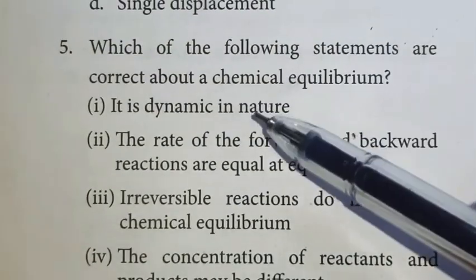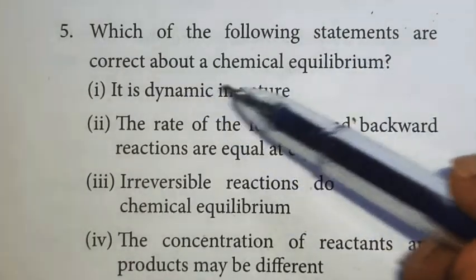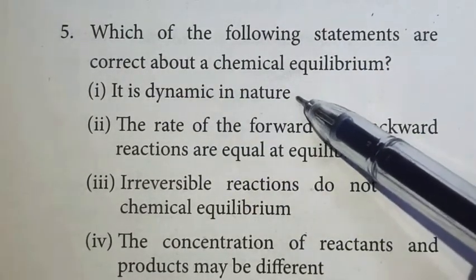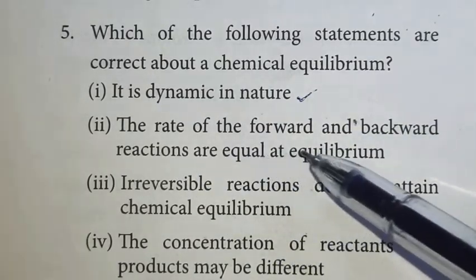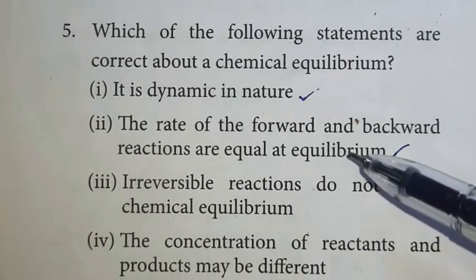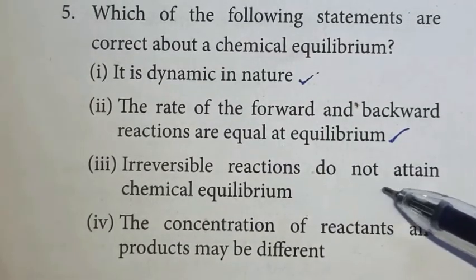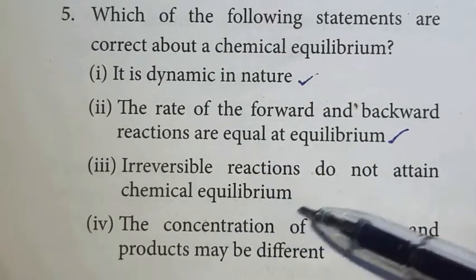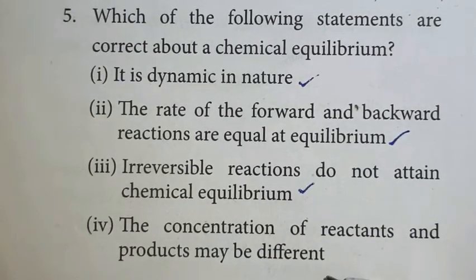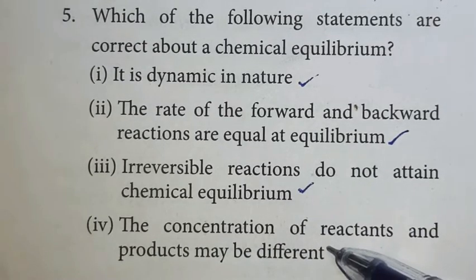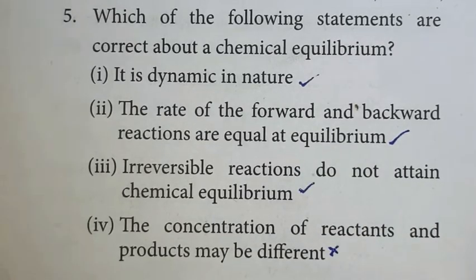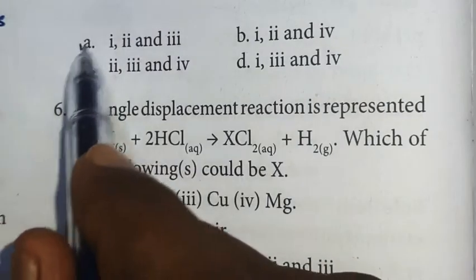Fifth question: Which of the following statements are correct about a chemical equilibrium? It is dynamic in nature - yes, correct. The rate of forward and backward reactions are equal at equilibrium - also correct. Irreversible reactions do not attain chemical equilibrium - also correct. The concentration of reactants and products may be different - this one is not a correct statement for chemical equilibrium. According to this, option A is the right answer.